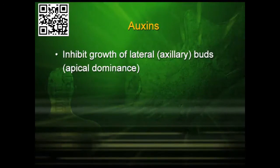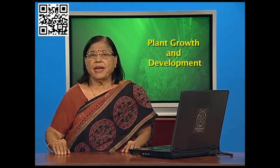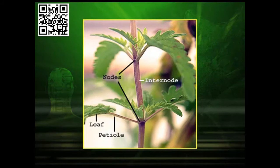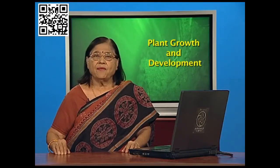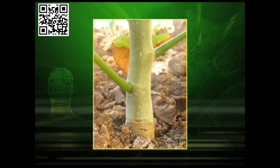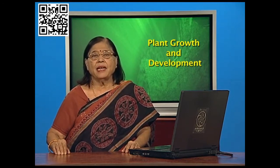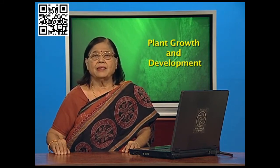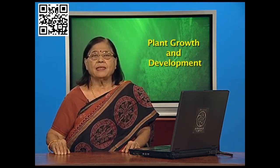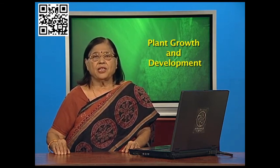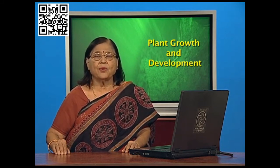Auxins inhibit growth of lateral or axillary buds — that is apical dominance. The shoot grows upward in an elongated way without giving any branch. But if you cut the tip of the shoot, two branches will come out because apical dominance is inhibited. As long as the tip is there, growth is only in one direction. The moment you pluck the tip, two or more branches will come. This process is taken care of by auxins, which thus have an important role in branching.